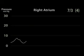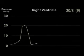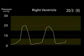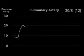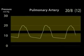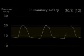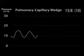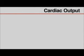Normal right atrial mean pressure is 1–5 mmHg. Normal right ventricular systolic and diastolic pressures are 15–30 over 1–7 mmHg. Normal pulmonary artery systolic and diastolic pressures are 15–30 over 4–12 mmHg, with a normal mean of 9–19 mmHg. Normal mean pulmonary capillary wedge pressure is 4–12 mmHg.